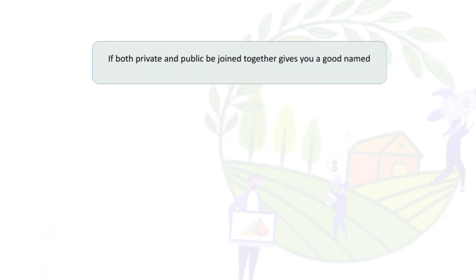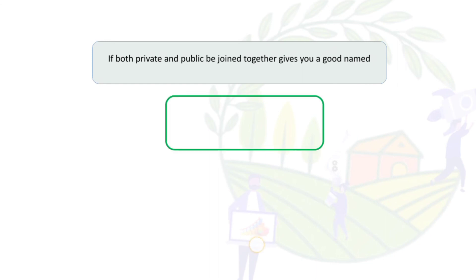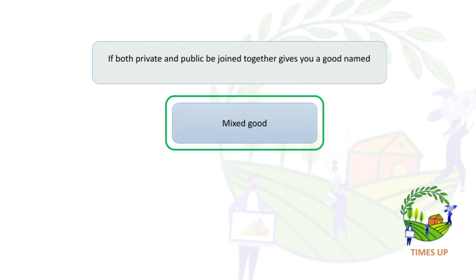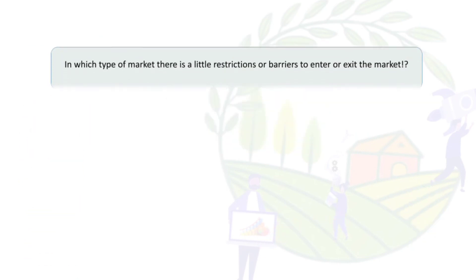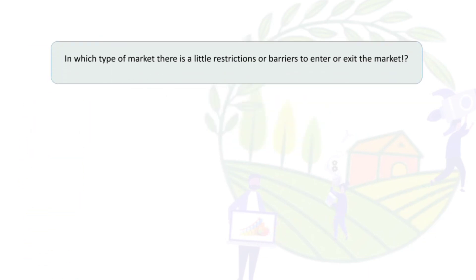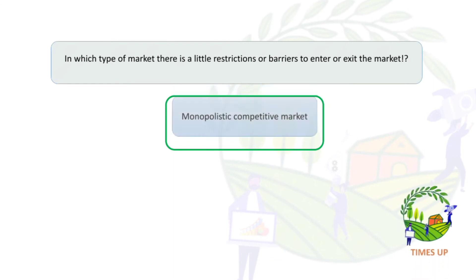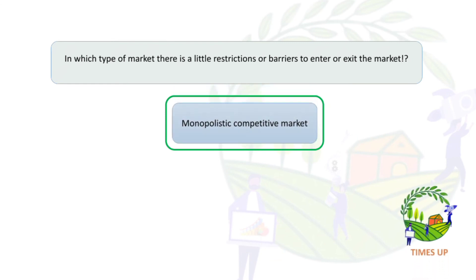When both private and public goods are joined together, they are called mixed goods. In which type of market are there little restrictions or barriers to enter and exit? The answer is a monopolistic competitive market.